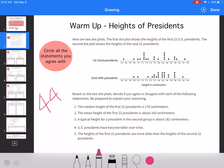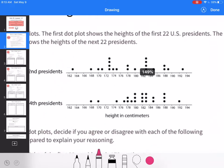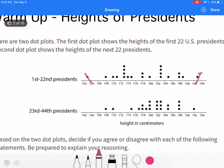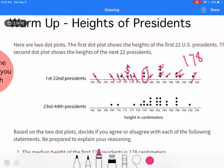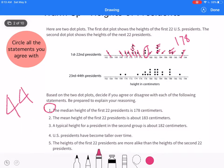Based on the two dot plots, decide if you agree or disagree with each of the following. Circle all the statements you agree with. The median height of the first 22 presidents is 178 meters. So I cross off on each side. You could write out the numbers if that makes it easier for you. I have two numbers in the center. 178 is going to be my median. So that's true.